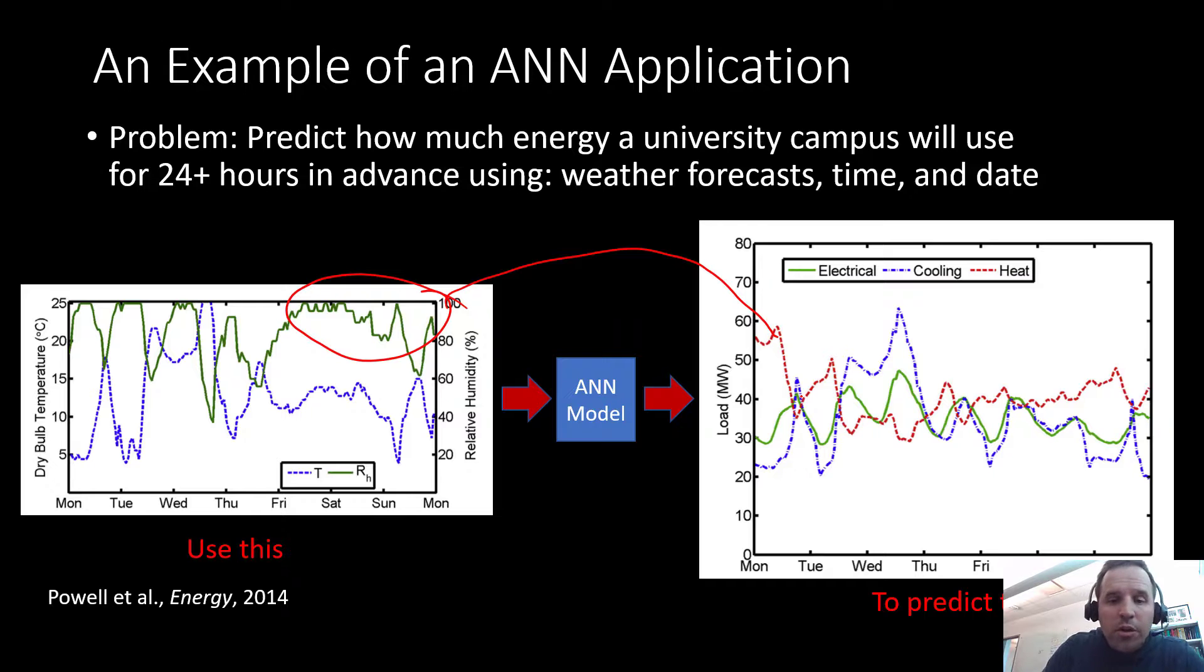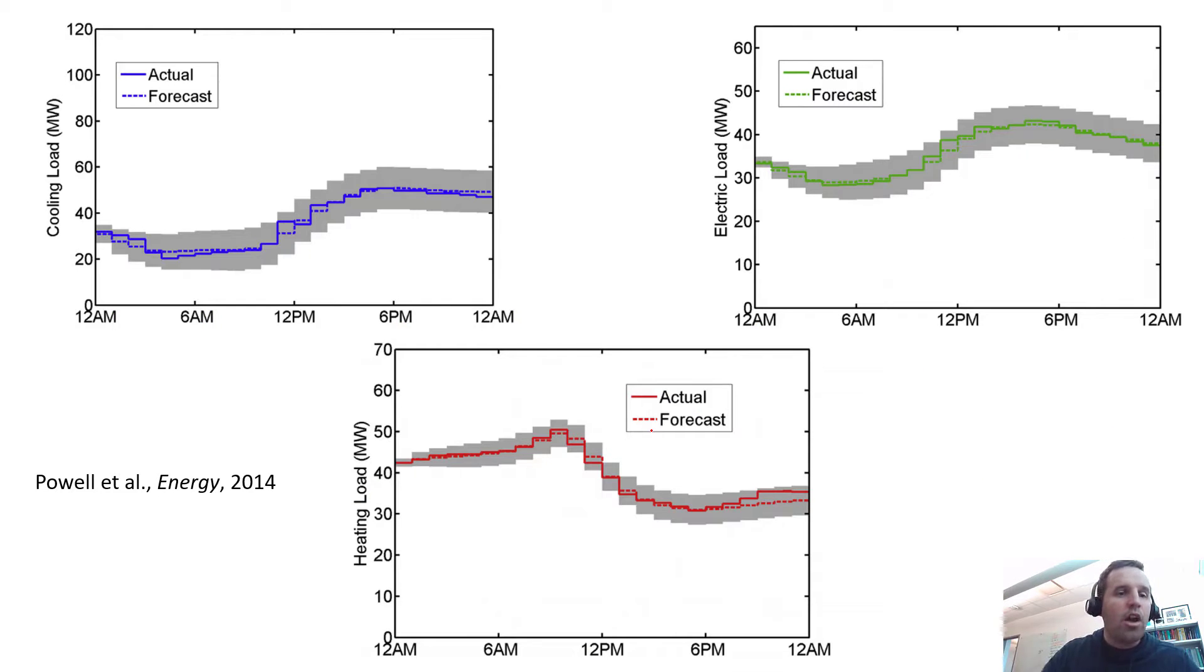We can fit a neural network model or this artificial neural network model here using fitting routines and that model structure that I've just described to try and capture these very complex relationships. And so here are some of the results. We fit this data, we fit a neural network model to this data. Then we run tests to see how well the model performs. And you can see that it performs very well.